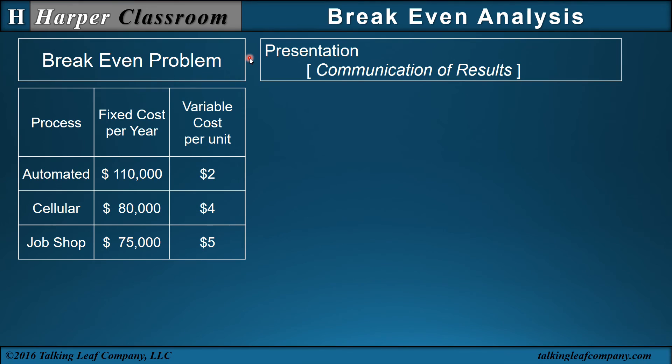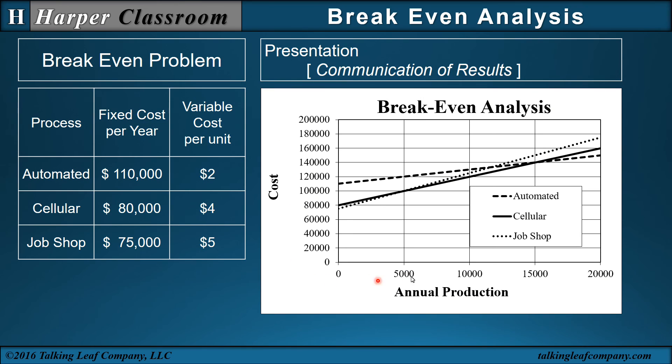The presentation or communication of results in business is important. Because even though you have the answer, you have to communicate in such a way that people can actually use the answer. There's many modes of communication: presentations and memos or reports. I'll use a simple graph. Now in this break even graph, on the X axis, I have my annual production. Here's my cost. For an annual production of zero, then my cost will just be my fixed cost: 75, 80, and 110. There's my 75,000, 80,000, and 110. And as I begin to produce, I add my variable cost of $2, $4, and $5 a unit for automated, cellular, and job shop.